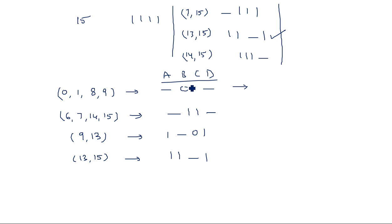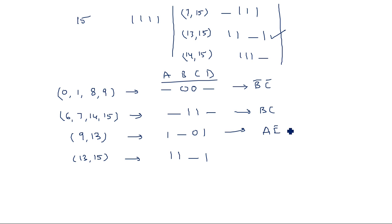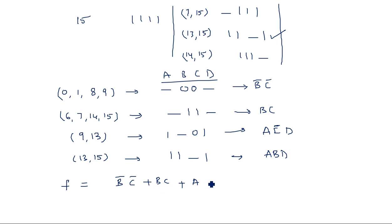Converting to Boolean expressions: -00- means A and D are gone, so it is B̄C̄. -11- means A and D are gone, so it is BC. 1-01 means B is gone, giving AC̄D. 11-1 means C is gone, giving ABD. So the final simplified expression is: f = B̄C̄ + BC + AC̄D + ABD. This is the finalized expression from the Quine-McCluskey or tabular method.